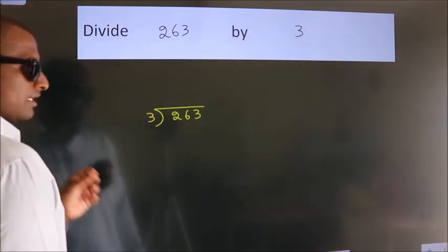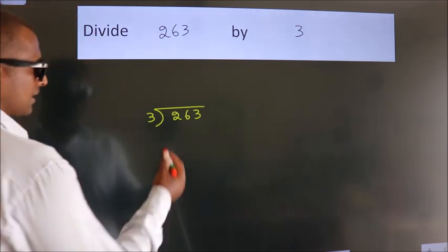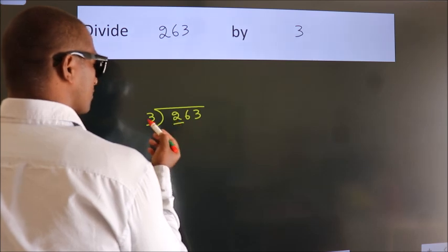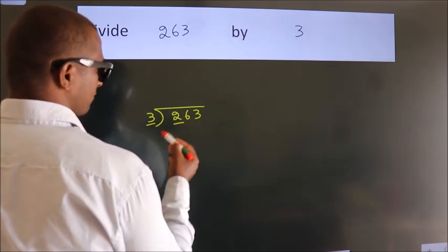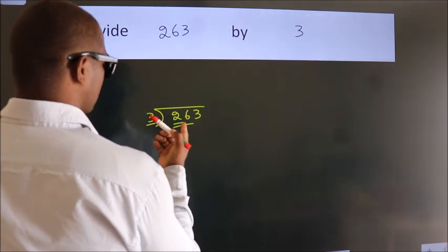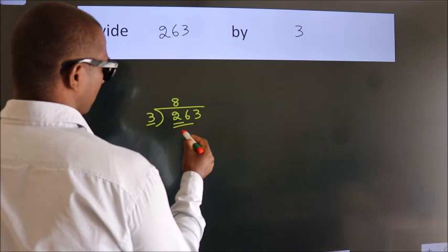This is your step 1. Next, here we have 2, here 3. 2 smaller than 3. So, we should take 2 numbers, 26. A number close to 26 in 3 table is 3 8s, 24.